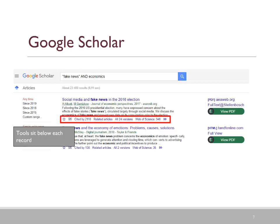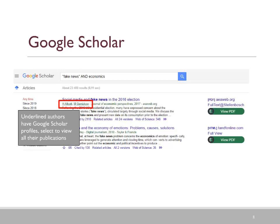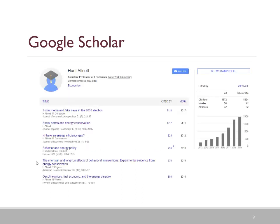Below each search result are tools for each record. In the search results, underlined authors have Google Scholar profiles. Select one of these authors to view all their publications. Once you have selected the Google Scholar profile, you are presented with a list of all the articles available from that author via Google Scholar.